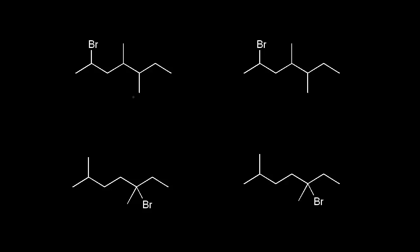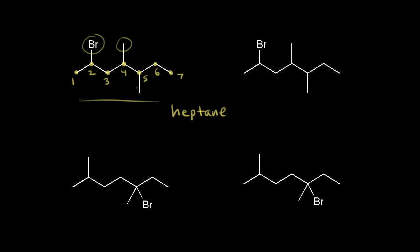For larger molecules, it's usually easier to use the IUPAC system. Let's name this compound using the IUPAC system — it's just like naming alkanes. First, find your longest carbon chain and name it: one, two, three, four, five, six, and seven. A seven-carbon alkane is heptane, so I write in heptane. Next, think about how to number this carbon chain. Numbering from the left gives one through seven — that gives a bromine at two, a methyl at four, and another methyl at five: two, four, and five.